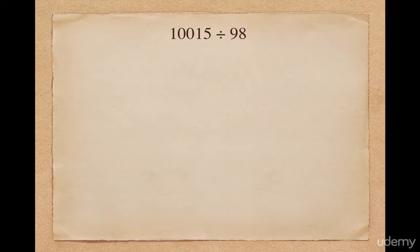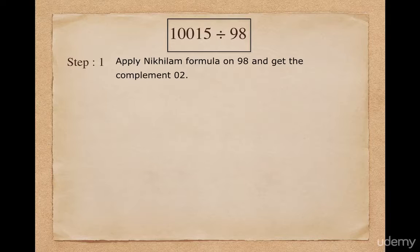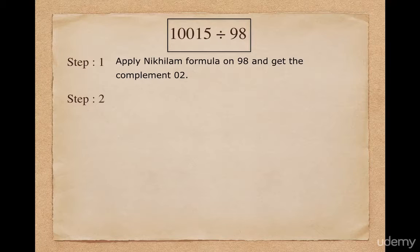Consider another example. Suppose I want to divide 10015 by 98. As a first step, apply the Nikhilam formula on 98 and get the complement 02. Please note it is 02, not just 2 — the 0 is very important. As the next step, split 10015 into quotient and remainder. Since 98 has two digits, 15 goes into the remainder part.